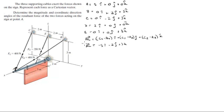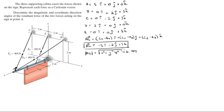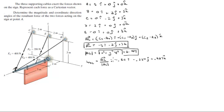Now that we have vector AC, we find its magnitude using the square root of the x-component squared plus the y-component squared plus the z-component squared, which equals 6.164. The unit vector from A to C is then AC divided by its magnitude, giving −0.811i − 0.324j + 0.487k.